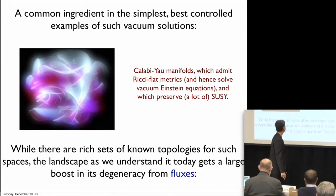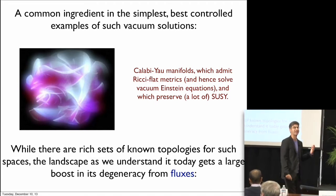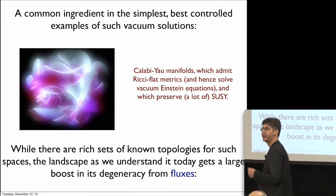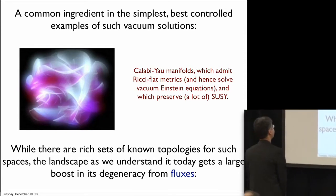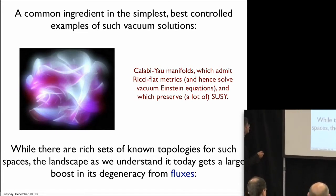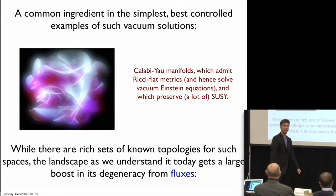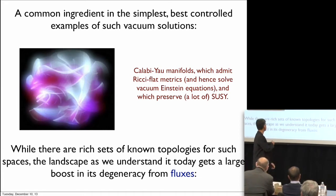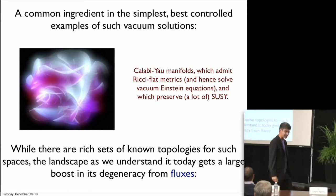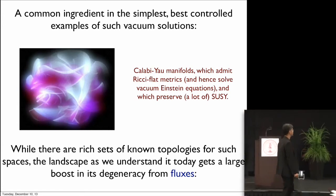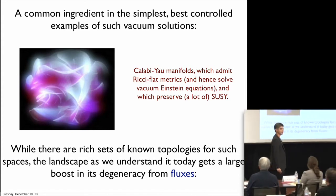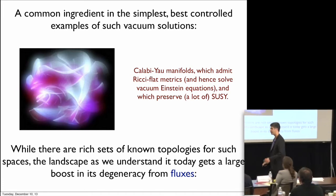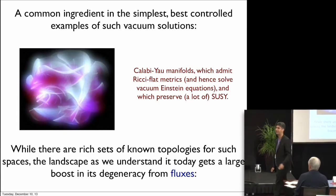There's a common ingredient in the most studied set of solutions — those that give space-time supersymmetry, the simplest examples being N=8 or N=4, and then N=2 and so forth. The ingredients are these special geometries called Calabi-Yau manifolds, named after mathematicians who conjectured and then proved their existence. These spaces are special because in Einstein's theory, a vacuum solution ought to be Ricci flat, and these spaces were proved to admit Ricci flat metrics, solving the vacuum Einstein equations. In technical terms, they admit Killing spinors, and so they preserve a lot of supersymmetry — enough that approximate statements can be promoted to exact ones with some confidence.